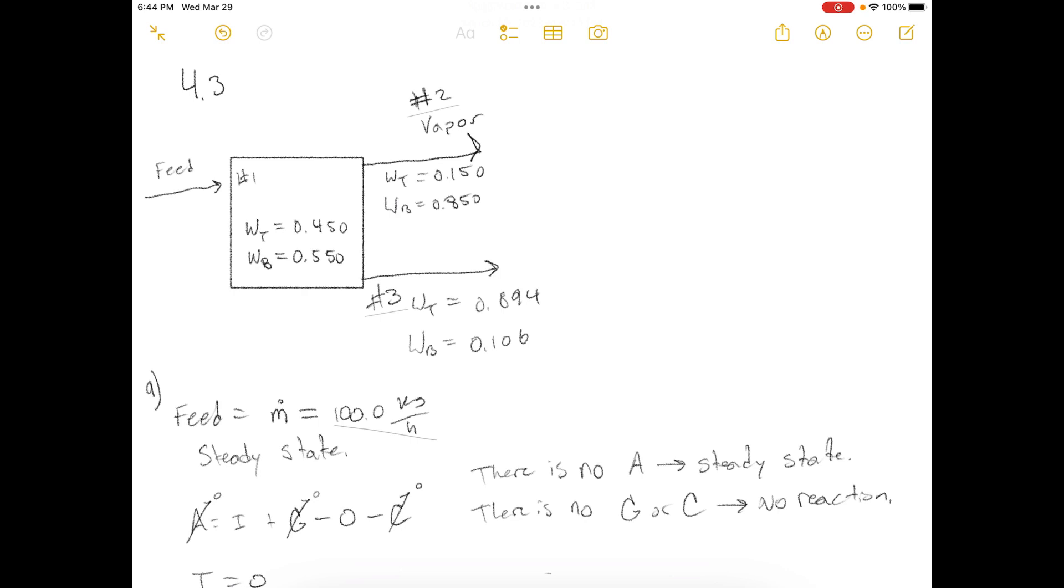Today, we're working out of Elementary Principles of Chemical Processes 3rd Edition, and we're doing problem number 4.3. The problem statement says: A liquid mixture of benzene and toluene contains 55% benzene by mass. The mixture is to be partially evaporated to yield a vapor containing 85% benzene and a residual liquid containing 10.6% benzene by mass.